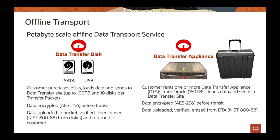So what's the difference between those two? The data transfer disk supports up to 100 terabytes of data, and you can send up to 10 disks per transfer package. So the limit capacity is 100 terabytes — you can divide that across 10 disks and send them over to us, and then we copy that data for you.